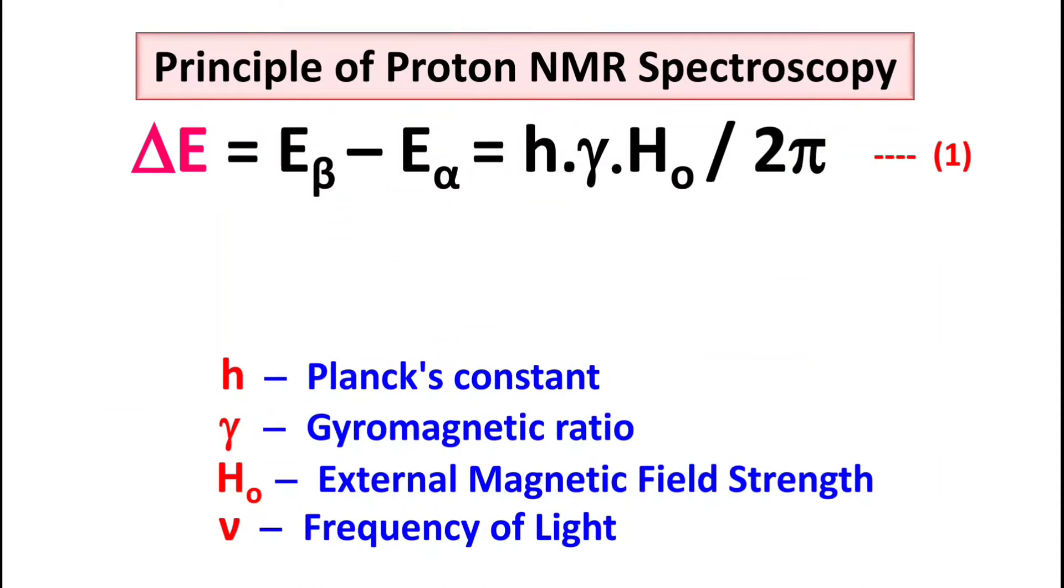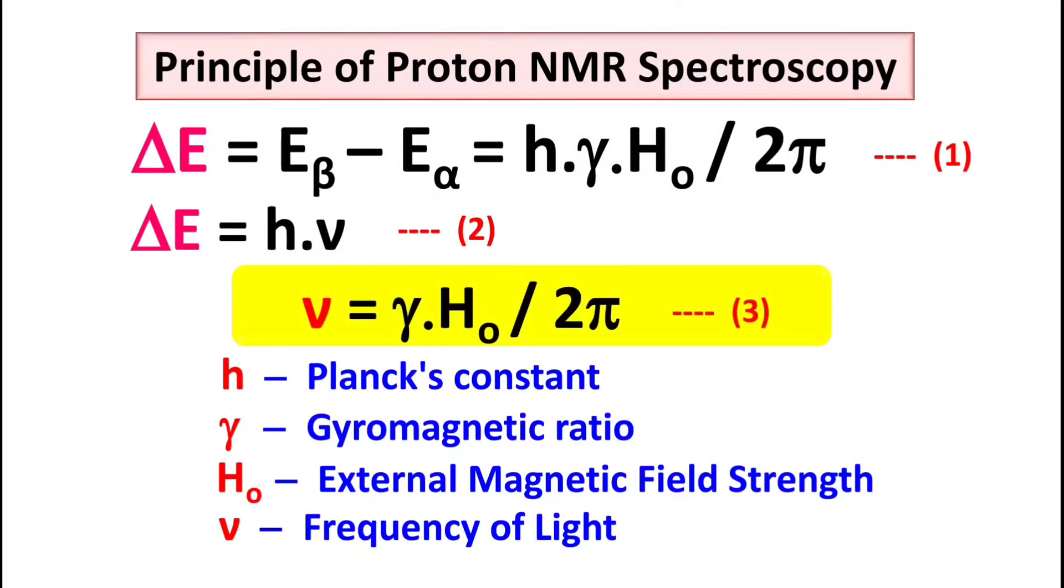The difference between E-beta and E-alpha is equal to h times gamma times H0 divided by 2π, where h is Planck's constant, gamma is gyromagnetic ratio, H0 is external magnetic field strength, and nu is frequency of light. So if I compare equation 1 and equation 2, I can conclude in terms of frequency: frequency of the signal equals gyromagnetic ratio times H0 divided by 2π.